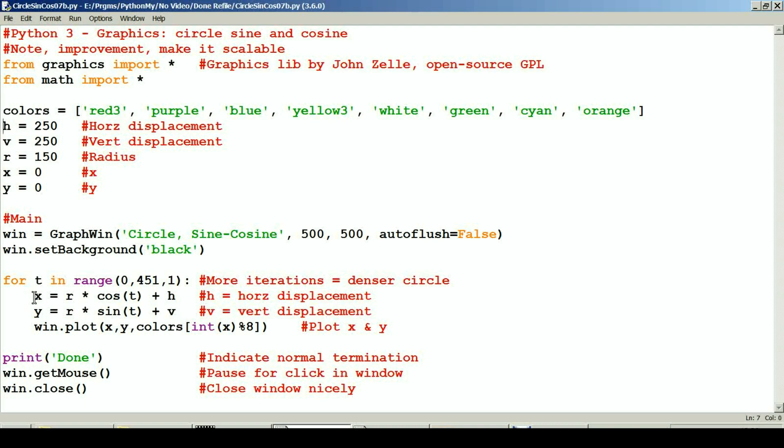So the formula is pretty simple. X equals R times cosine of T. This is T up here. Plus our H, which is our value from back up here. Y equals R times the sine of T. Plus V, and V is back up here again. Our vertical displacement.